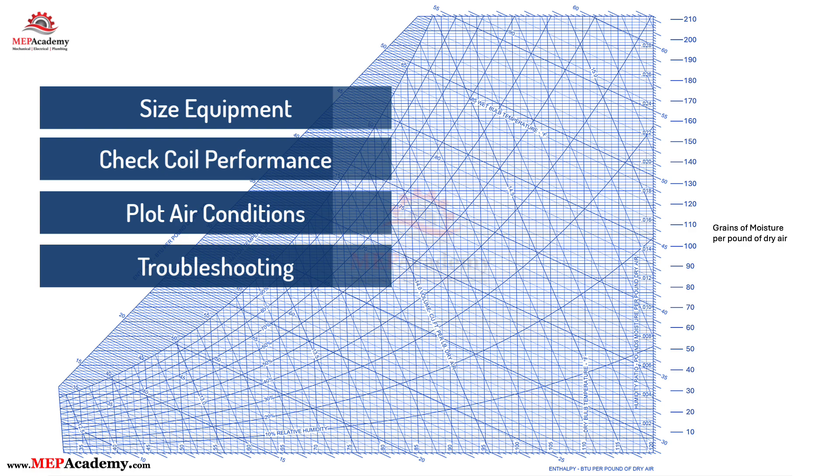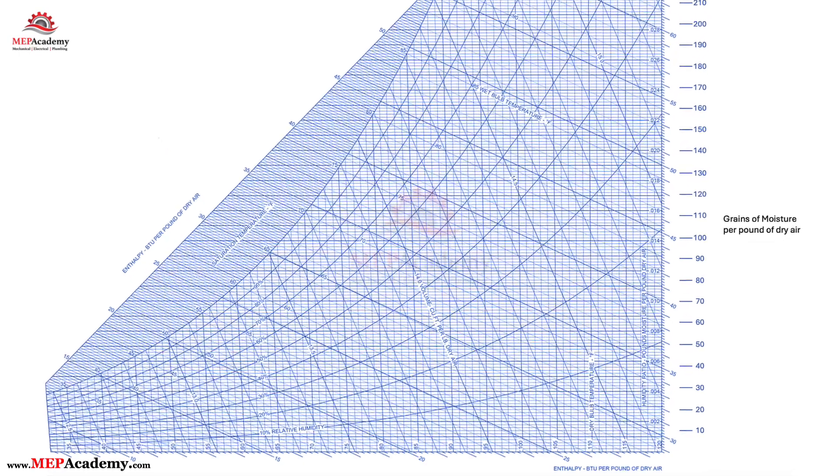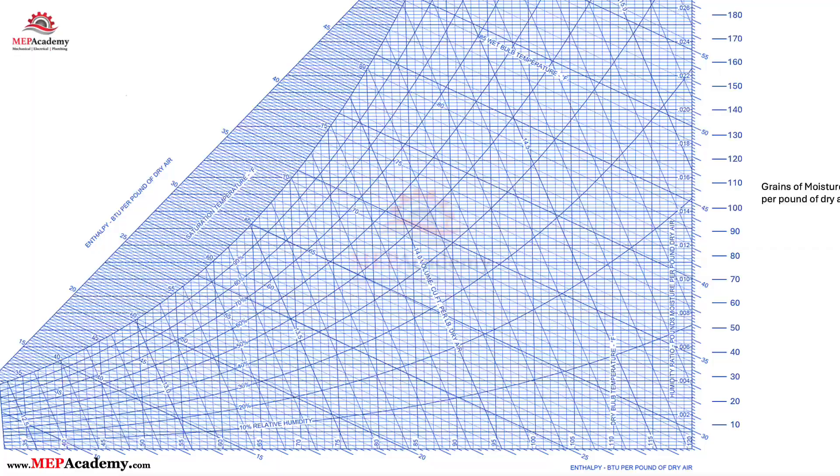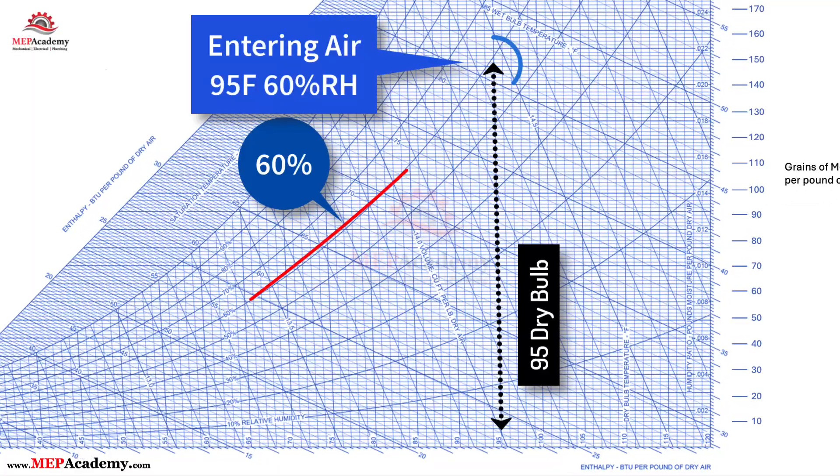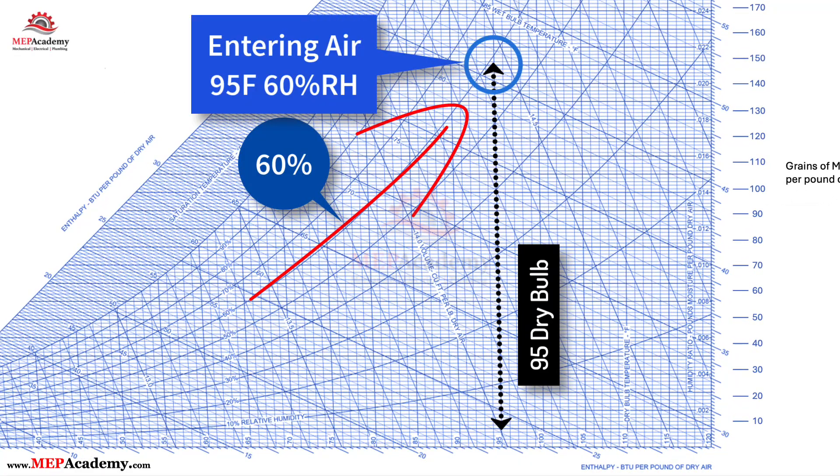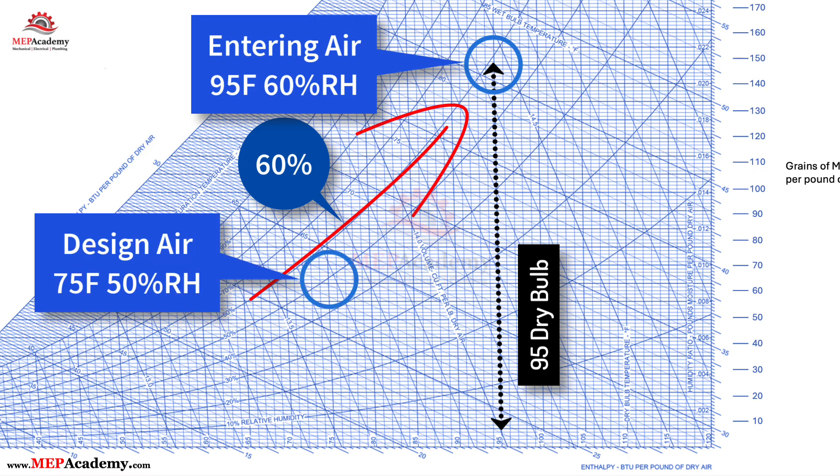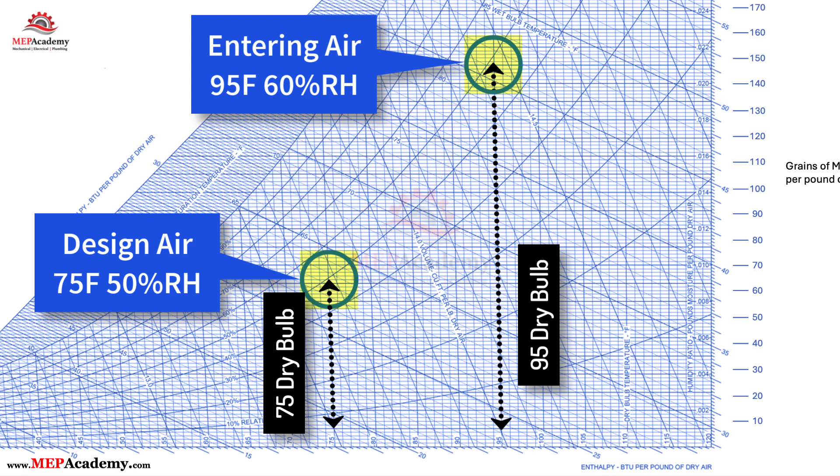Let's walk through a simple HVAC scenario. Problem: You're conditioning air in a commercial office building. Outdoor air is coming in at 95 degrees Fahrenheit dry bulb and 60% relative humidity. You need to condition it to a comfortable indoor design condition of 75 degrees Fahrenheit dry bulb and 50% relative humidity. Step 1: Plot the outdoor air. This is your starting point. Use the dry bulb and move up to the 60% relative humidity curve to find the outdoor air condition.